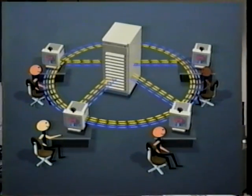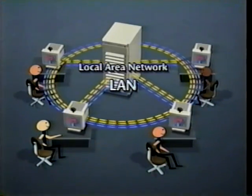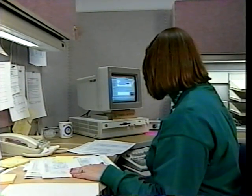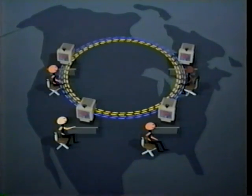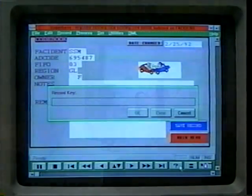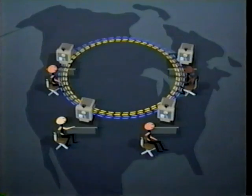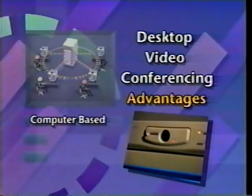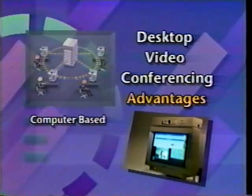In desktop video conferencing, computers can be set up in several ways. One way is on a local area network (LAN), such as at the FAA Academy for individual training. Or students may be connected on a wide area network (WAN). Codecs provide a two-way video and audio connection for the exchange of text, graphics, video, and audio at the desktop. New digital telephone technology allows coast-to-coast information transfer at inexpensive rates. Because it's computer-based, desktop video conferencing allows participants to control, display, and transmit various applications and types of information.